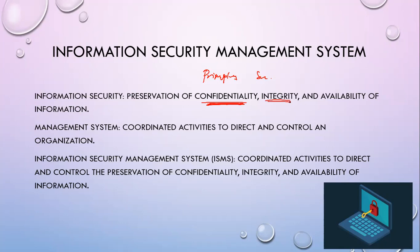Next is your integrity. When we say there should be integrity in the information, that information should be trustworthy and it should not be modified by anyone without authorization. For example, information from top management can be read only by the next level of management — the middle management — but they cannot modify that specific information or report. That is under your integrity of information.